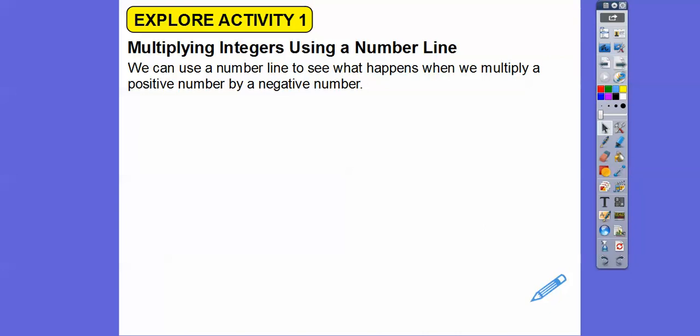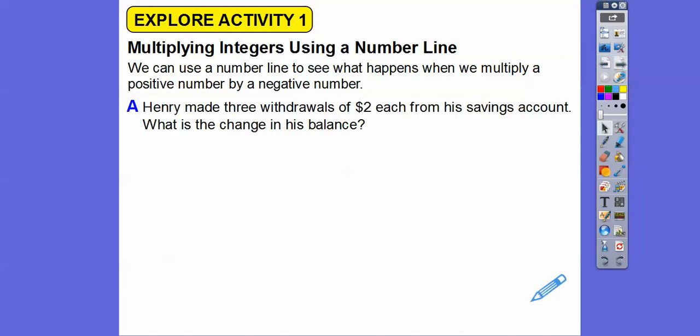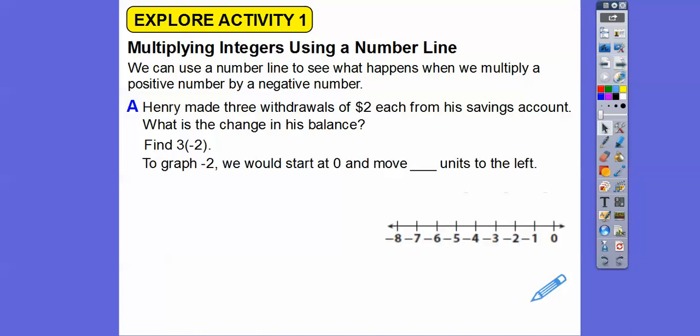We can use a number line to see what happens when we multiply a positive number times a negative number. So Henry made three withdrawals — that means less money when he takes out money — two dollars each from his savings account. What is the change in his balance? Not spare change, but how much did his balance change? Since he did three of them, we're finding three times negative two. But first, let's do three of those.